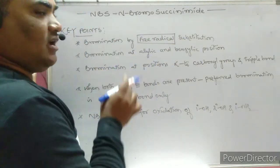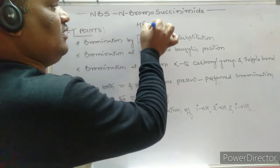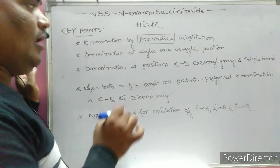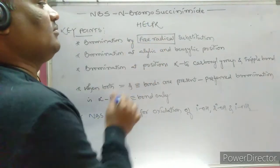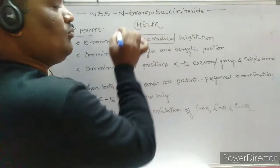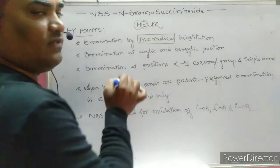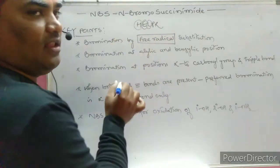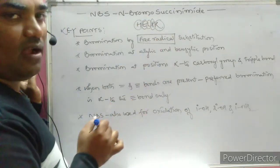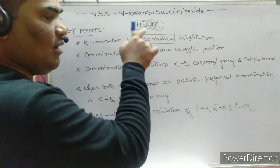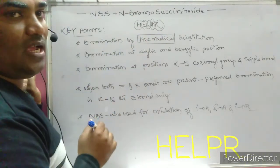In any chemical reaction, a very important mnemonic is HELPER, which indicates the condition for free radical mechanism. H stands for heat greater than 500 degrees centigrade, E for electricity, L for light, P for peroxide, and R for radical. If any one of these HELPER conditions is given, the reaction proceeds via a free radical mechanism.